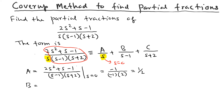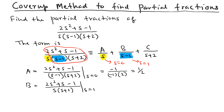To find B, we cover up the (s − 1) term in the denominator, leaving s(s + 2), and plug in s = 1 because that makes (s − 1) zero. The numerator gives 2(1) + 1 − 1 = 2, and the denominator gives 1 × 3 = 3, so B = 2/3.